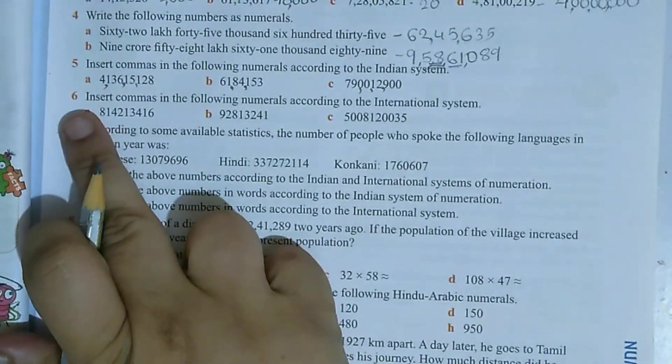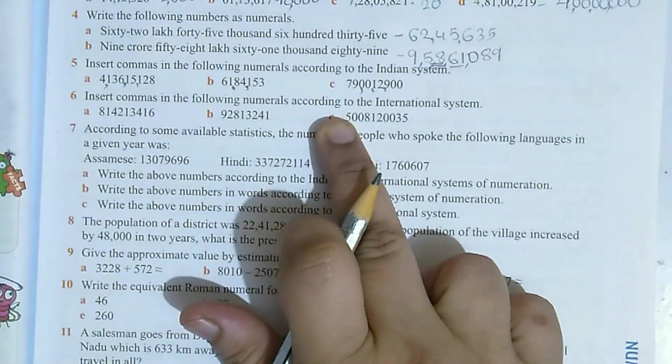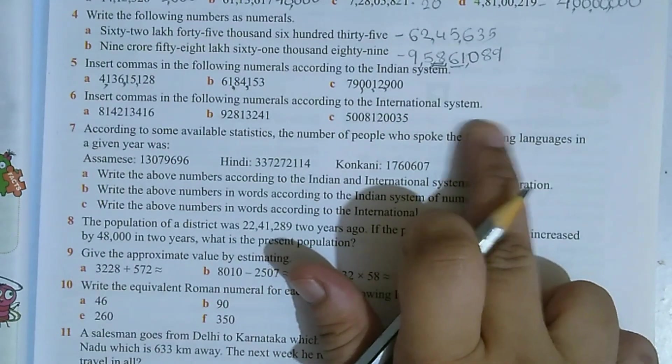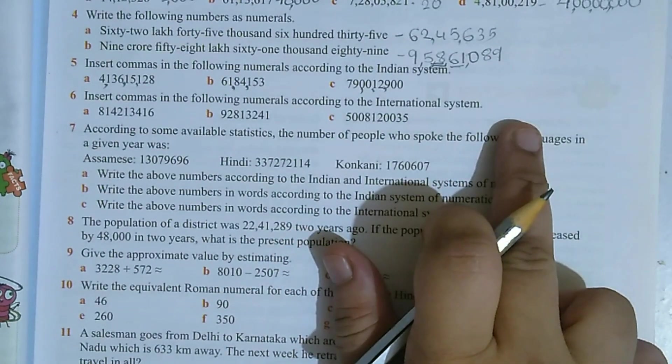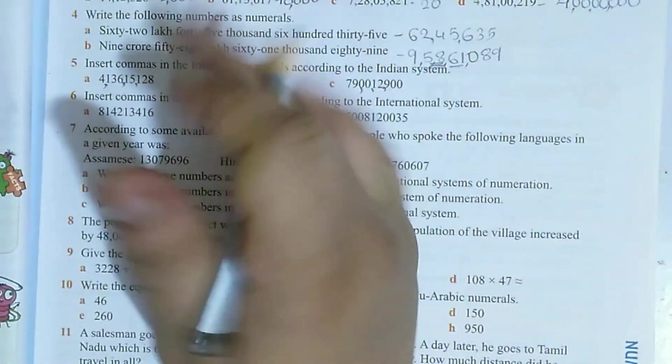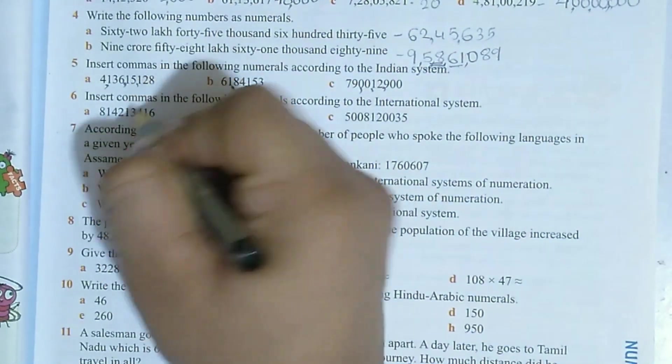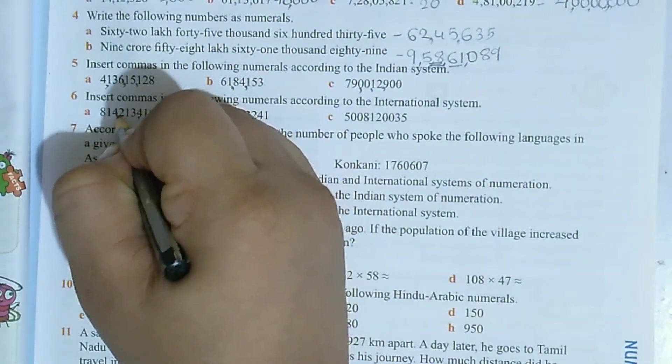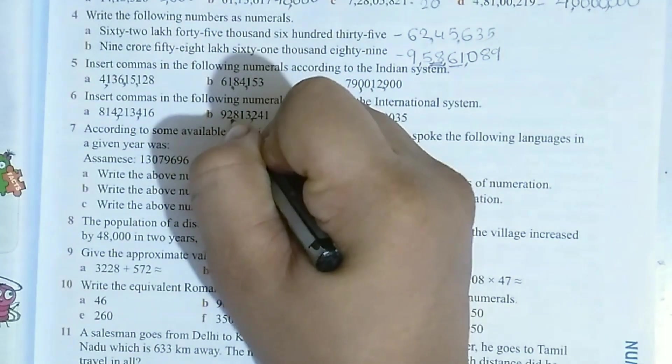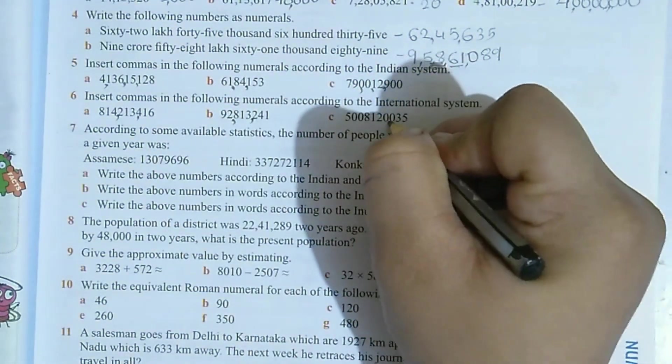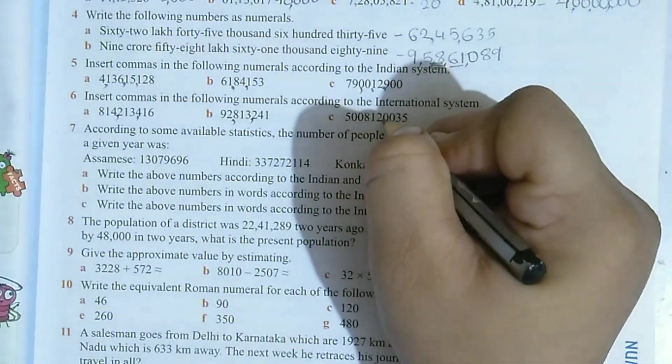And question number 6: Insert commas in the following numerals according to the international number system. So in this system, every 3 digits comma comes. So here comma is given. Then again 1, 2, 3, here it will come. Here it is given, then here it will come.